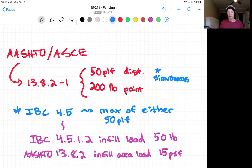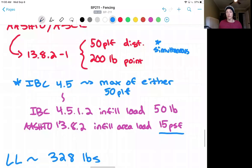It's also worth noting, if you check out these sections of the IBC, you see IBC 4.5.1.2 has an infill load of 50 pounds on any square foot part of the entire structure. Our infill structure, so that's our wire mesh in this case. And AASHTO section 13.2 specifies an infill area load of 15 pounds per square foot. And we're going to take that 15 pounds per square foot because that is going to be far and away our maximum load we see in the infill area.